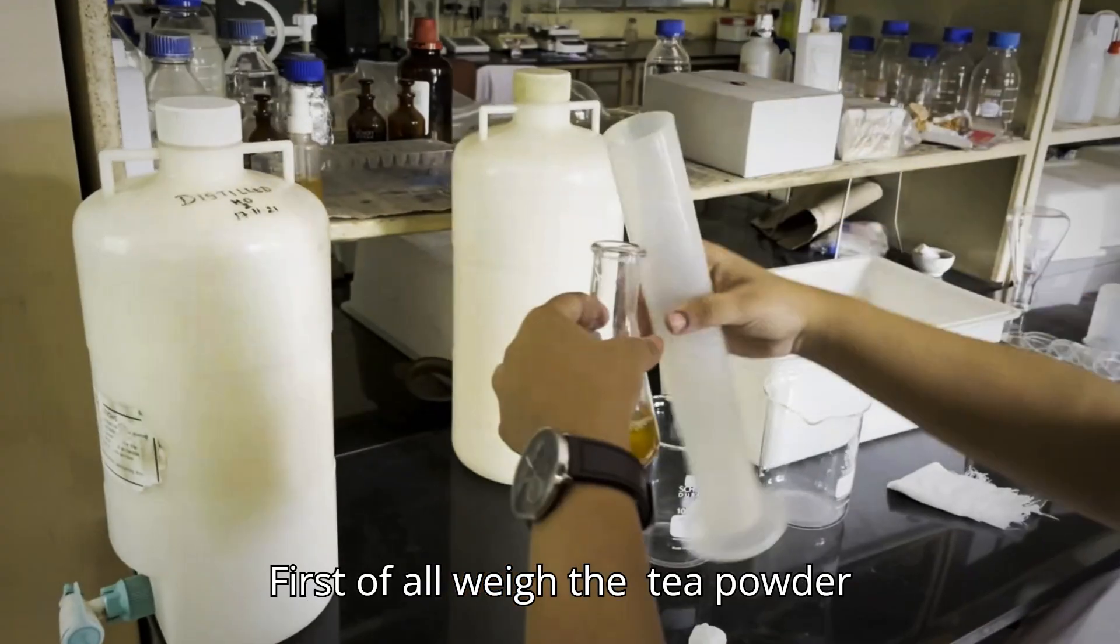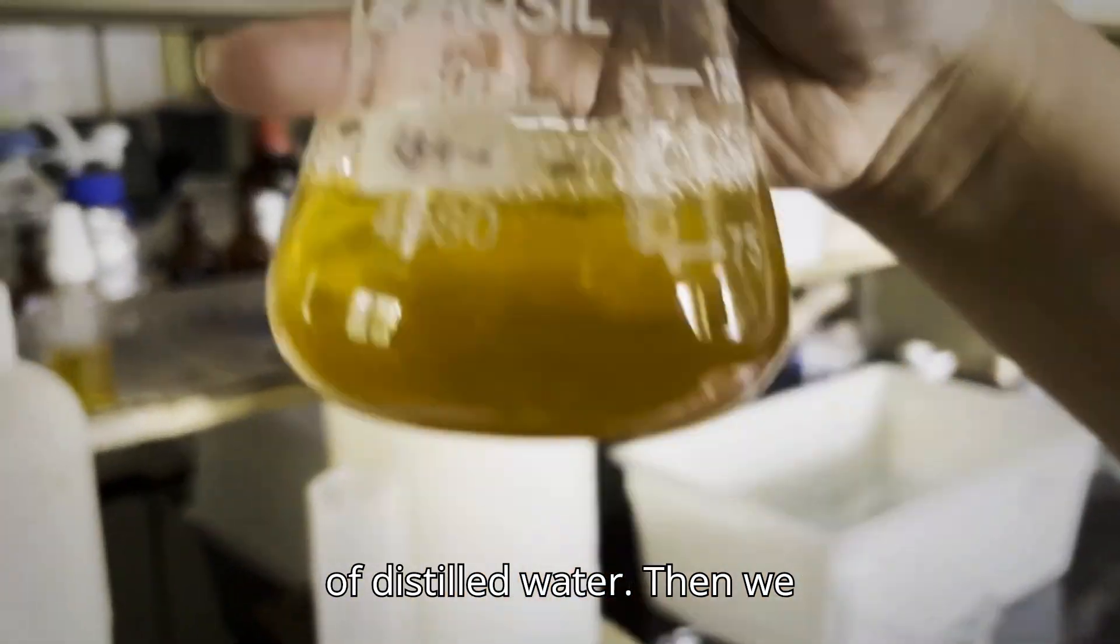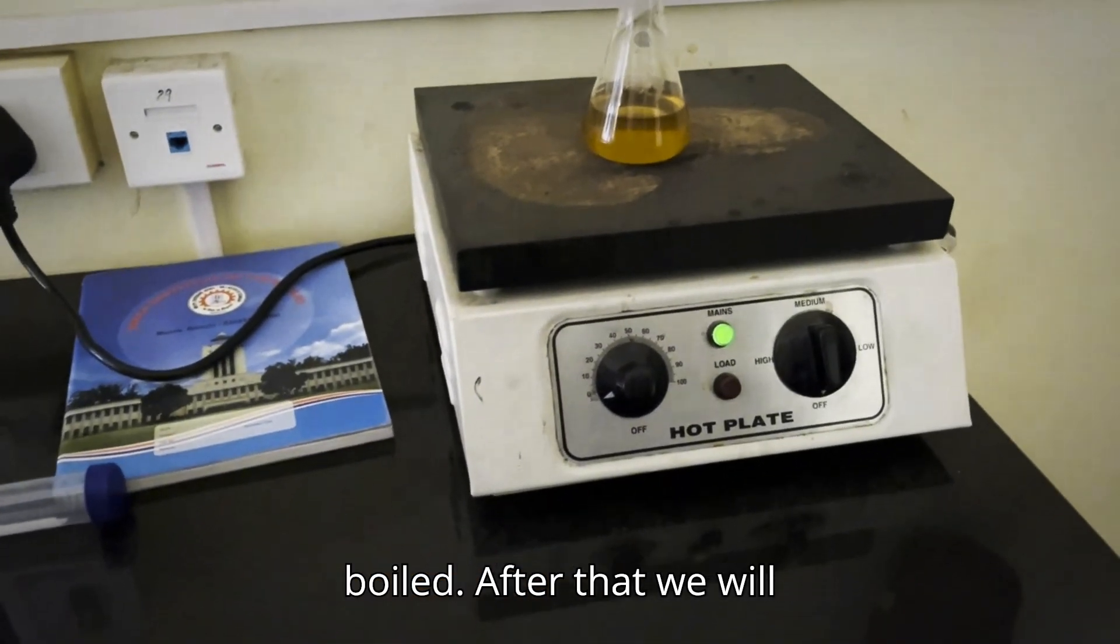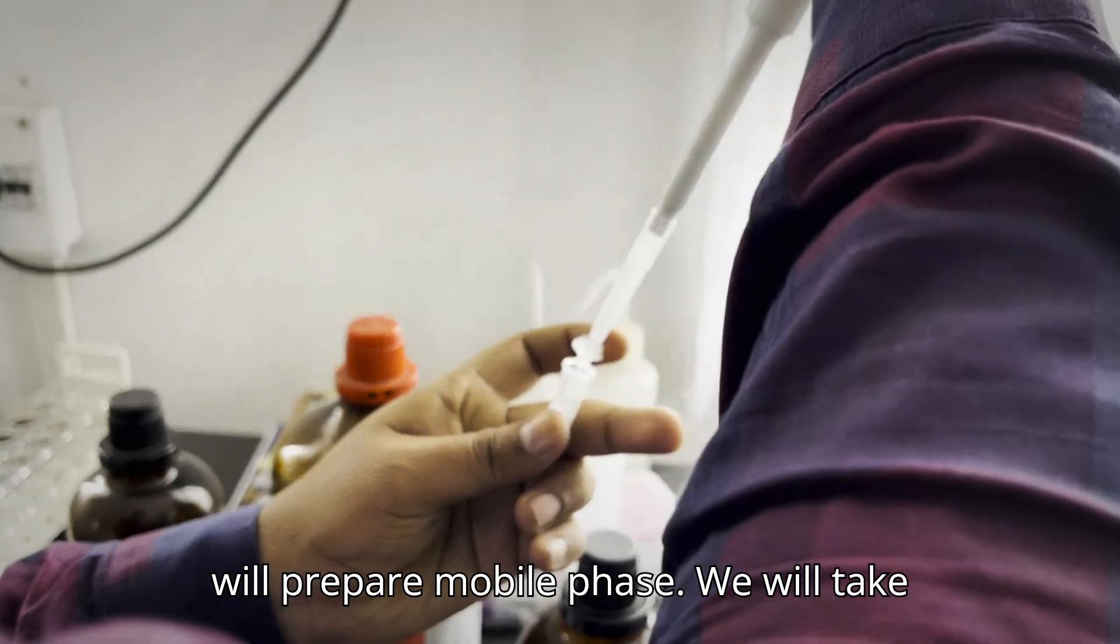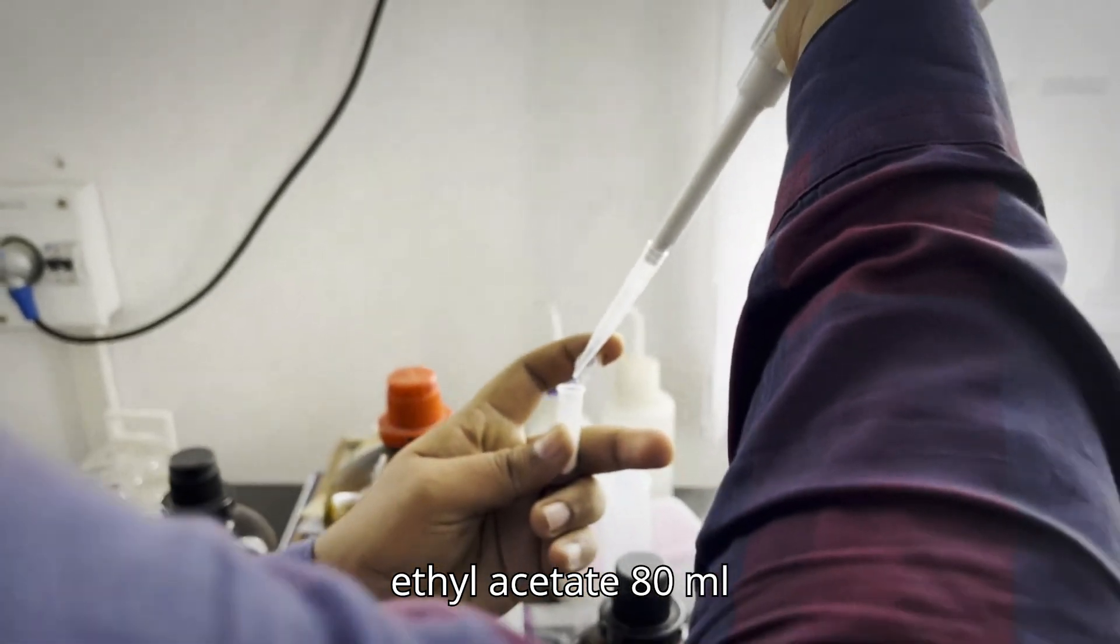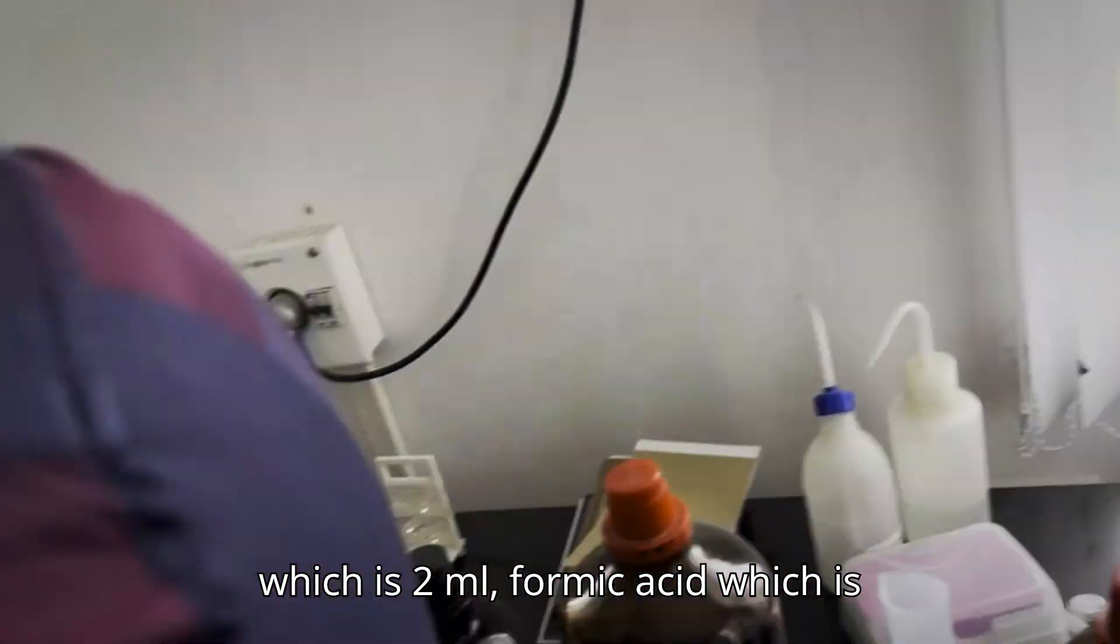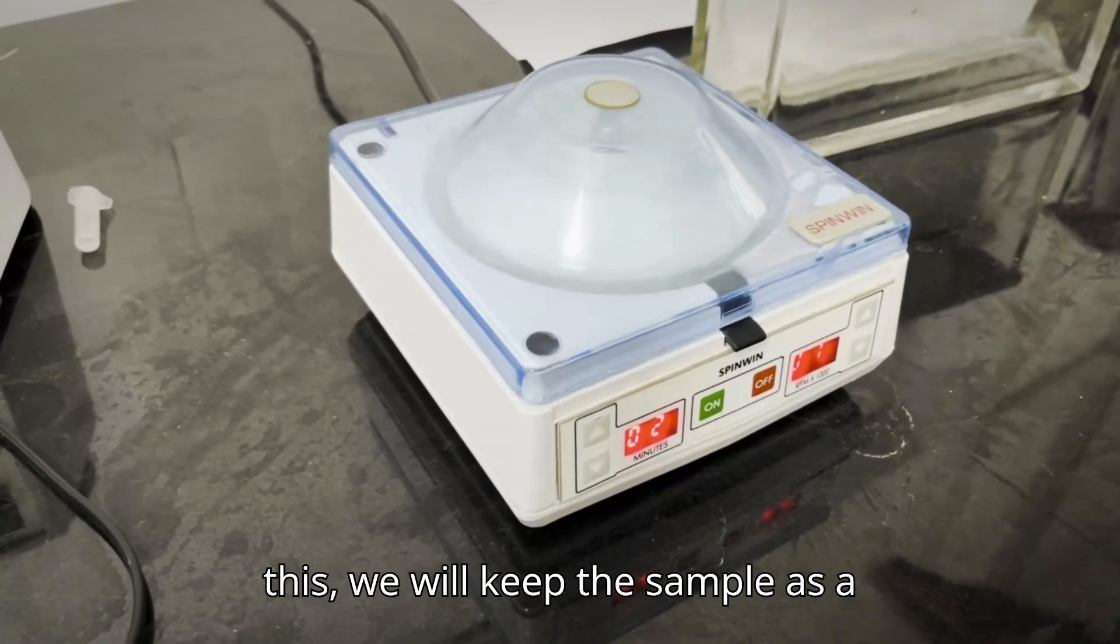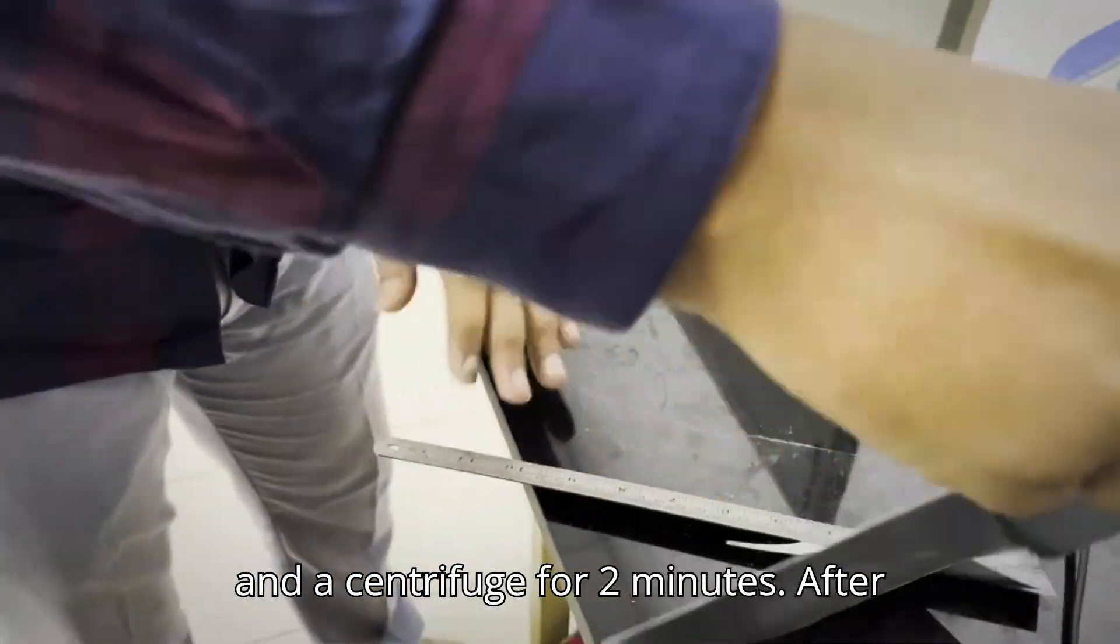First we will weigh the caffeine powder then we will dissolve in 100 ml of distilled water. Then we will keep it until it gets boiled. After that we will prepare mobile phase. We will take ethyl acetate 18 ml, methanol which is 2 ml, formic acid which is 0.2 ml and mix it. After this we will keep the sample and the standard of caffeine inside the centrifuge and we will centrifuge for 2 minutes.